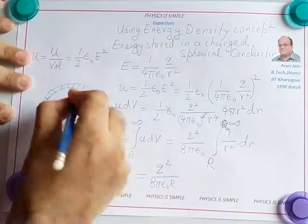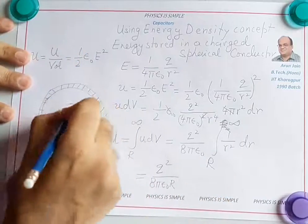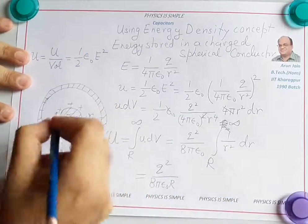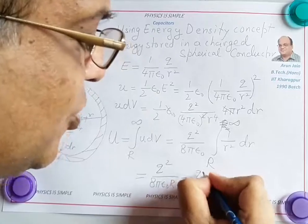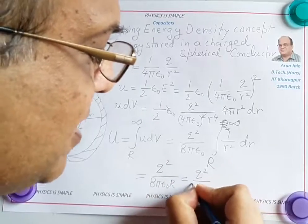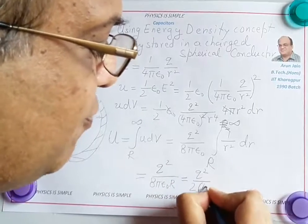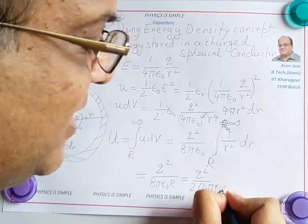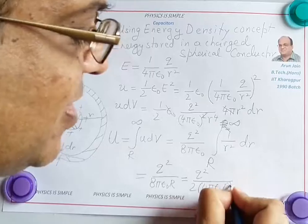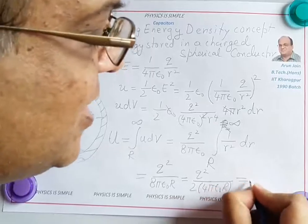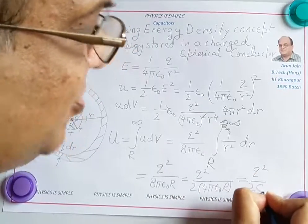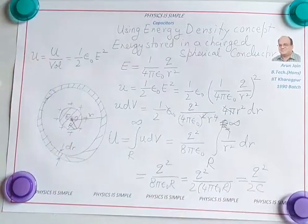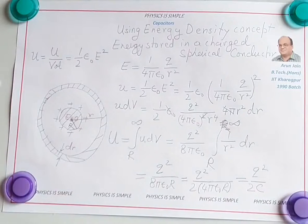This gives us q squared over 8 pi epsilon naught R. We know the capacitance of a spherical conductor is 4 pi epsilon naught R, so this becomes q squared over 2 times 4 pi epsilon naught R, which gives us the formula q squared over 2C. This is the energy stored in a charged spherical conductor.